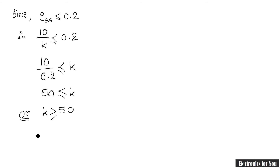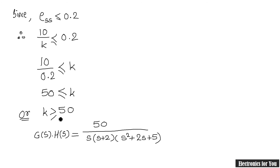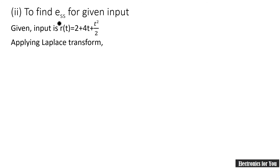Therefore in our equation G(s)·H(s), putting the minimum value K equals 50, the open loop transfer function becomes 50 over s(s+2)(s²+2s+5). We got the value of K which is greater than or equal to 50. Now let us find the next part: E_ss for the given input.